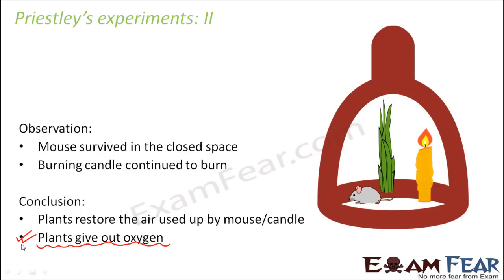So one conclusion was that plants give out oxygen. Relating this to the current process of photosynthesis: during photosynthesis, plants take in carbon dioxide and water and, in the presence of sunlight, give out glucose plus oxygen. So oxygen is a product of photosynthesis, and Priestley's experiment confirmed that plants give out oxygen as a product.